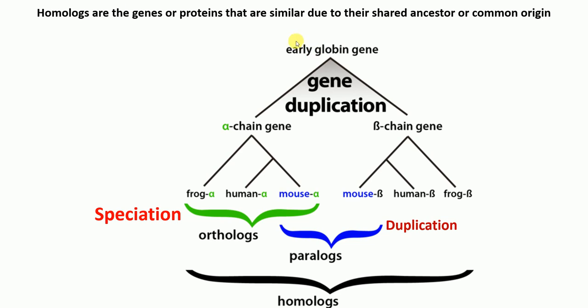For example, we have an early globin gene from one species. Then a gene duplication event occurs, and it becomes two genes: one is the alpha chain gene and the other is the beta chain gene.